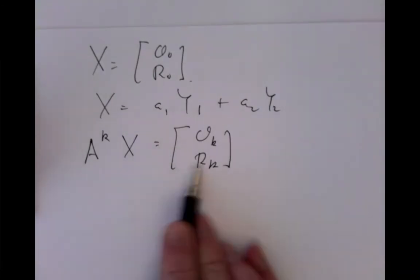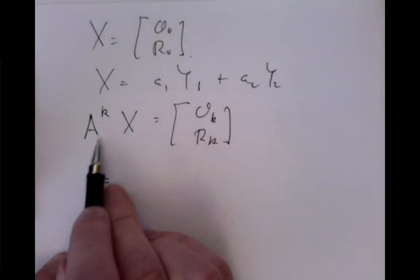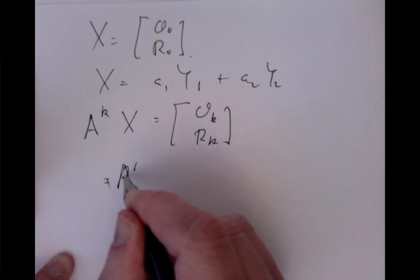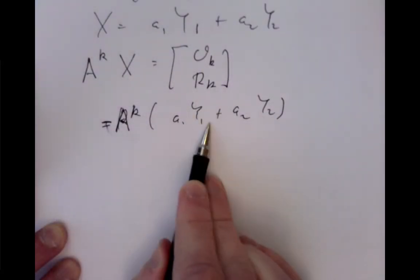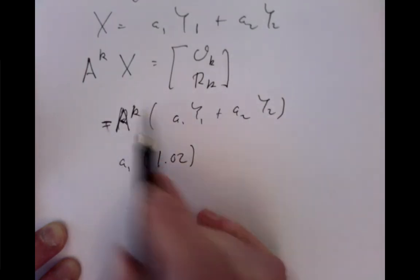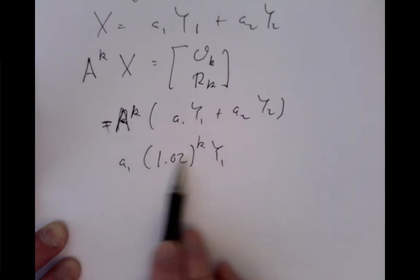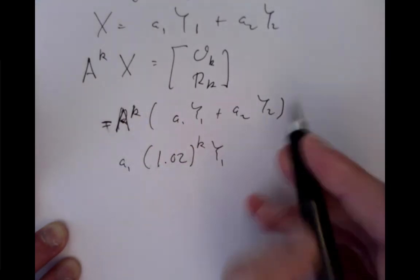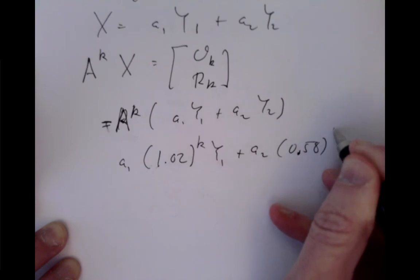Then we would say, well, then what happens k months later is we do k times our linear transformation of our data vector, and we get that linear transformation then simply applied that number of times to these guys. And we know what it does to each of them. We said that this was at an eigenvalue of 1.02. So this is going to be a_1, 1.02^k, applied to y_1. Because every time A hits y_1, it multiplies by 1.02, so k times it'll do it k times. And similarly, k times it'll hit this guy and multiply by 0.58^k, y_2.